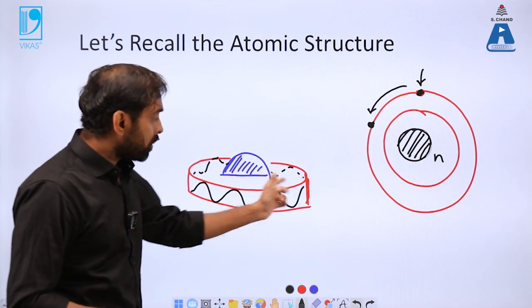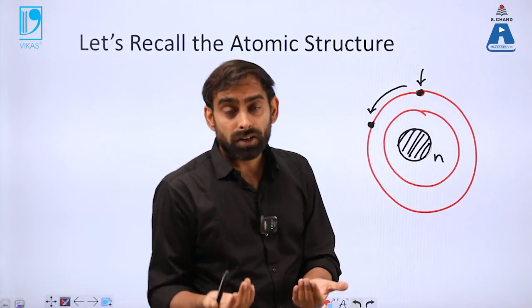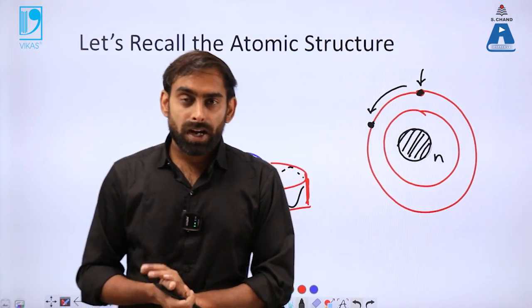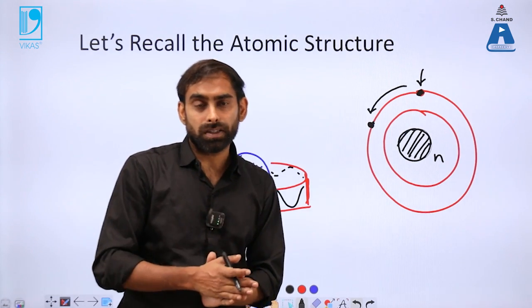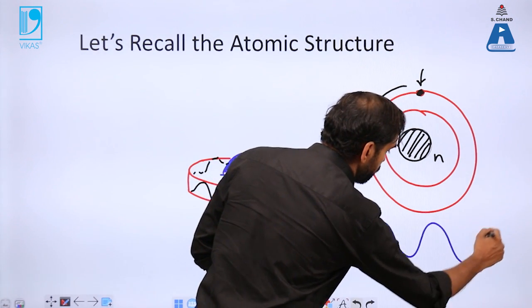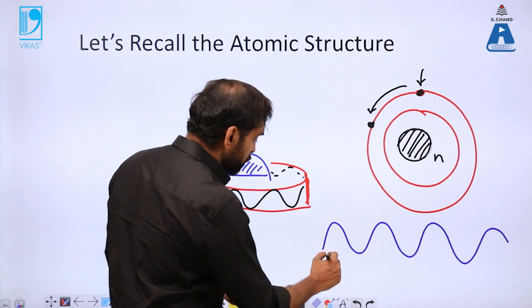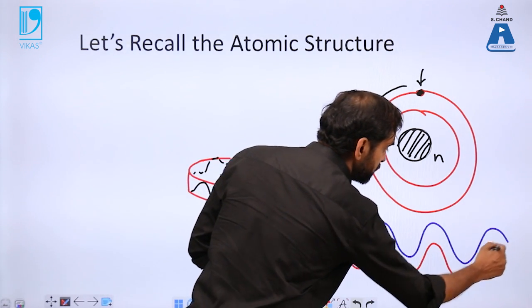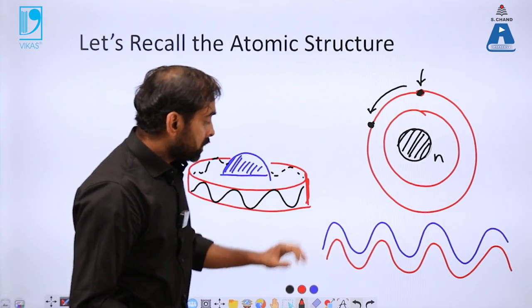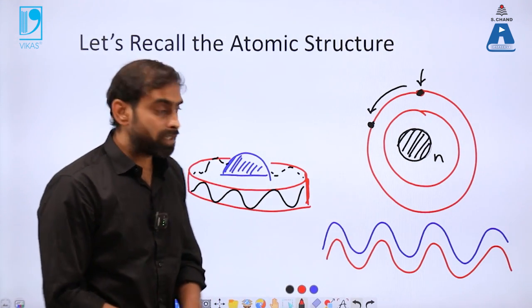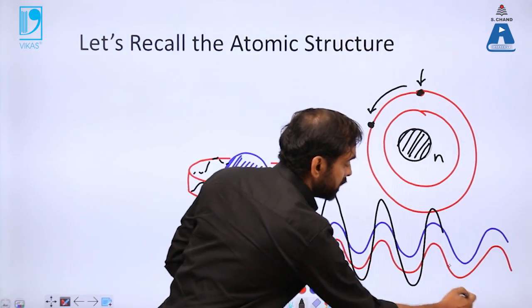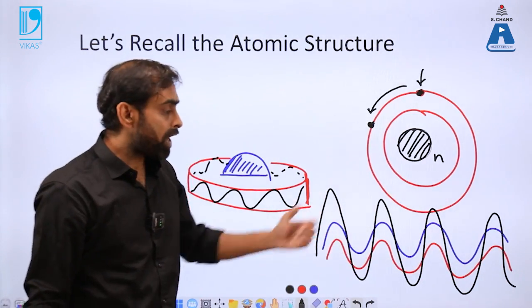When there is one electron, there will be one wave. When there are two electrons, there will be two waves. You should know from classical physics that if two waves are present and they are in the same phase—their crests and troughs coming at the same time—they will show constructive interference. The amplitude of this wave will increase, leading to the generation of a new standing wave with much higher amplitude.